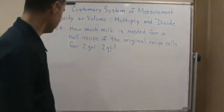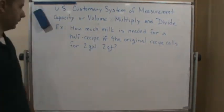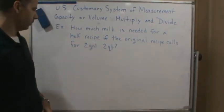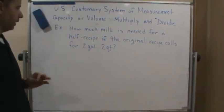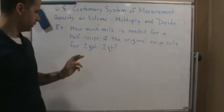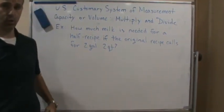So let me use an example. How much milk is needed for a half recipe if the original recipe calls for two gallons and two quarts of milk?